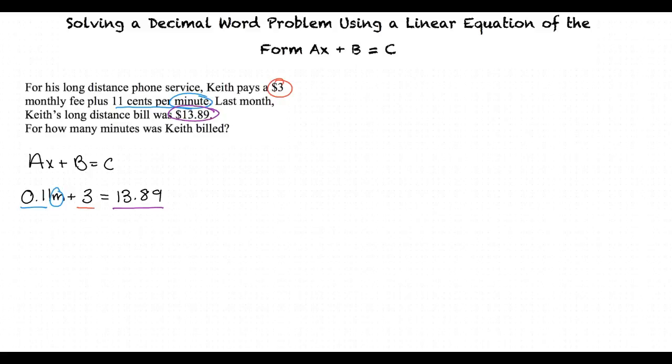Why did we decide that m would represent the number of minutes Keith was billed for? Good question. We use a variable to represent any value that is unknown. Since we don't know how many minutes Keith was billed for, we are using the variable m to represent that value.